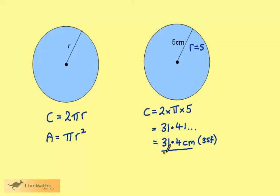Note the units are cm. The distance around the circumference is a length. The area is going to be pi times 5 squared.